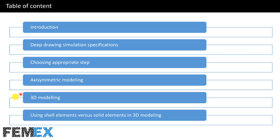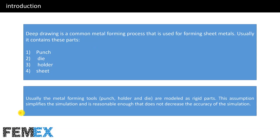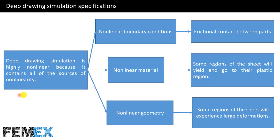Deep drawing is a common metal forming process that is used for forming sheet metals. Usually it contains these parts: punch, die, holder, and the sheet. Usually the metal forming tools including punch, holder, and die are modeled as rigid parts. This assumption simplifies the simulation and is reasonable enough that it does not decrease the accuracy of the simulation.